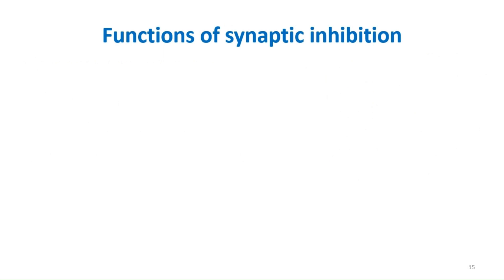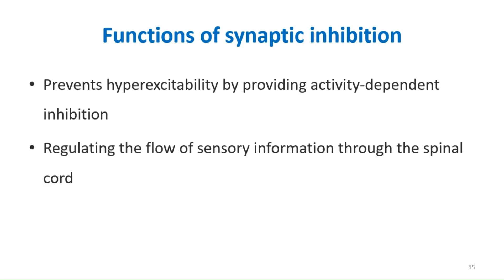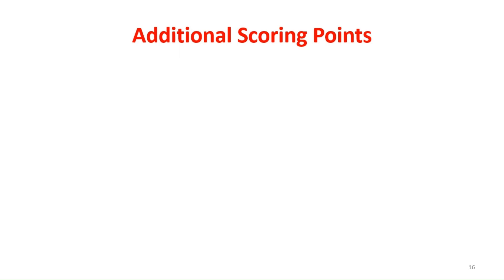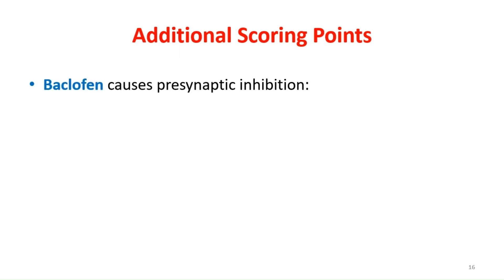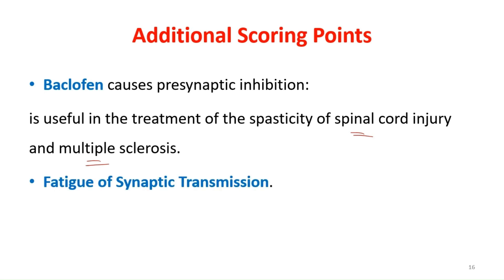The functions of synaptic inhibition include preventing hyper-excitability by providing activity-dependent inhibition, and regulating the flow of sensory information through the spinal cord, allowing fine-tuning of processes. As additional scoring points, Baclofen is a GABA agonist that produces presynaptic inhibition and is useful in treating spasticity in spinal cord injury and multiple sclerosis. Another applied aspect is fatigue of synaptic transmission, which explains why seizures in epilepsy subside after some time.